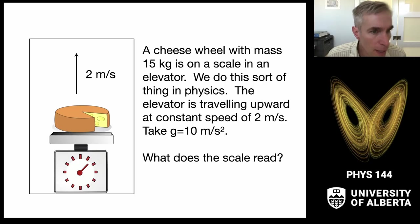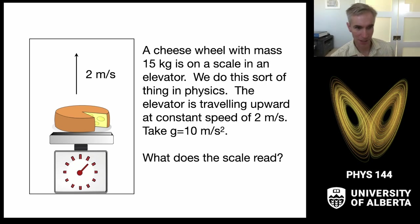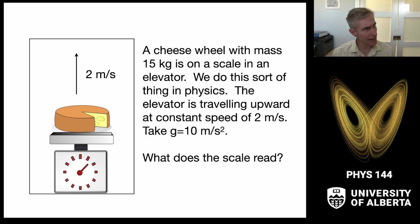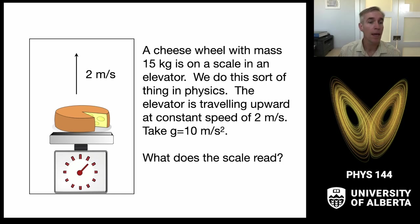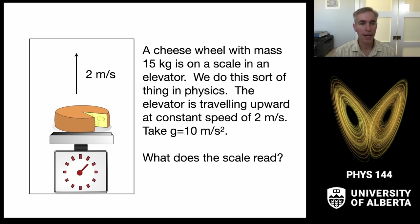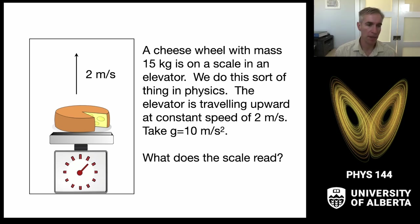Let's consider what happens if we have a cheese wheel sitting on top of a scale inside of an elevator — a classic physics experiment. If that elevator is traveling upward at a constant speed of two meters per second, what does the scale read? For these problems, I'm going to make the math a little easier by taking g to be 10 meters per second squared.